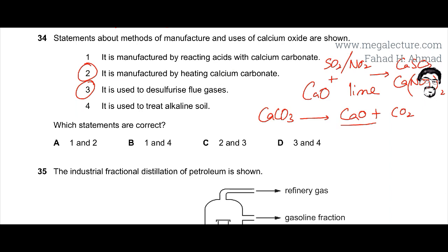That is a correct statement. And it is used to treat alkaline soil. This itself is a base. Calcium oxide is a basic compound. It reacts with acidic soils. It's used to treat acidic soils. So this alkaline part is incorrect. It should be acidic soils. So the fourth statement is also incorrect.